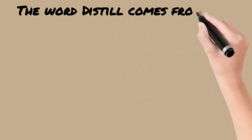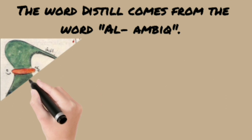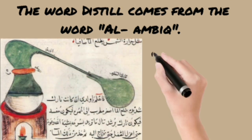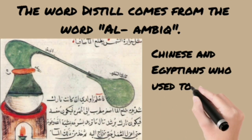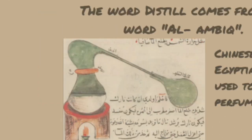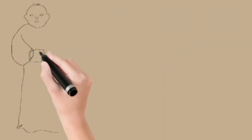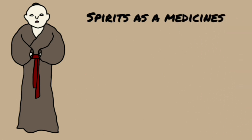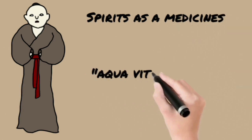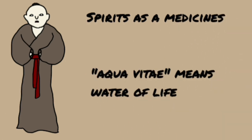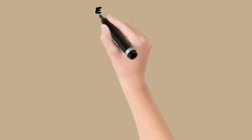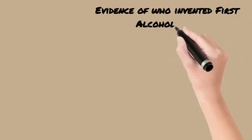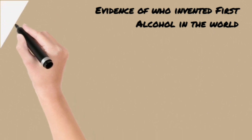The word 'distill' comes from the word 'alambique.' The distillation process was known to the ancient Chinese and Egyptians, who used it to produce perfumes. In early days, Christian monks used spirits as medicines and called them 'aqua vitae,' meaning 'water of life.'